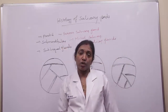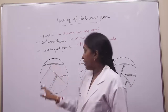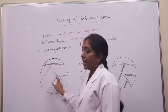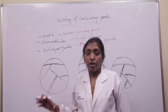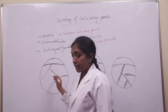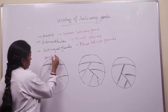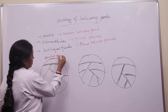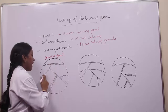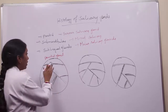Coming to the parotid gland or serous salivary gland — the parotid gland is covered by a capsule, and from the capsule, various septa divide the gland into more number of lobes and lobules.